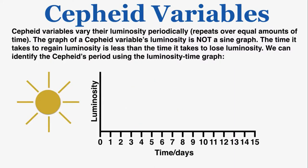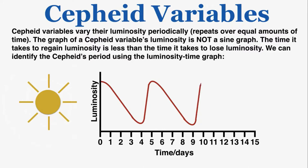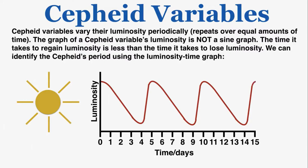Cepheid variables vary their luminosity periodically, which means they repeat over equal amounts of time. The graph of a Cepheid variable's luminosity versus time is not a simple symmetric graph — the time it takes to regain luminosity is less than the time it takes to lose luminosity. We can use luminosity-time graphs to identify the period of a Cepheid variable.